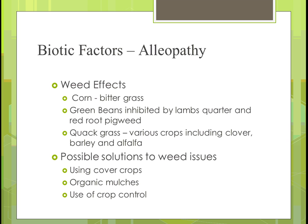Weed effects: for corn, there's bitter grass; green beans are inhibited by lamb's quarter and red root pigweed; and quack grass affects various crops including clover, barley, and alfalfa — if quack grass is growing around them, those crops will not grow well. Some solutions for this: you could use cover crops, which give weeds less chance to germinate. You can use organic mulches as an addition to your soil. You can also use crop control by the type of crop you put in, or intercropping where you plant two crops at the same time.